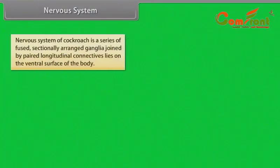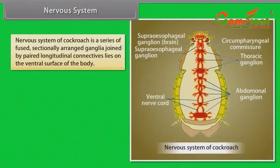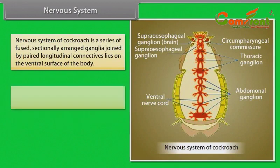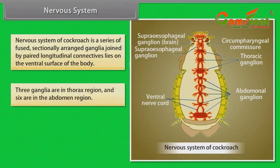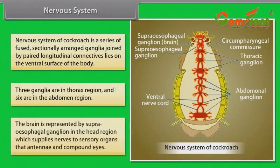Nervous System: The nervous system of cockroach is a series of fused, segmentally arranged ganglia joined by paired longitudinal connectives, lying on the ventral surface of the body. Three ganglia are in the thorax region and six are in the abdomen region. The brain is represented by the supra-oesophageal ganglion in the head region, which supplies nerves to sensory organs — the antennae and compound eyes.